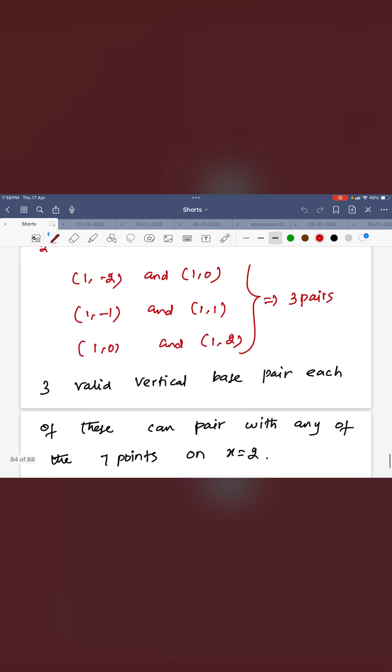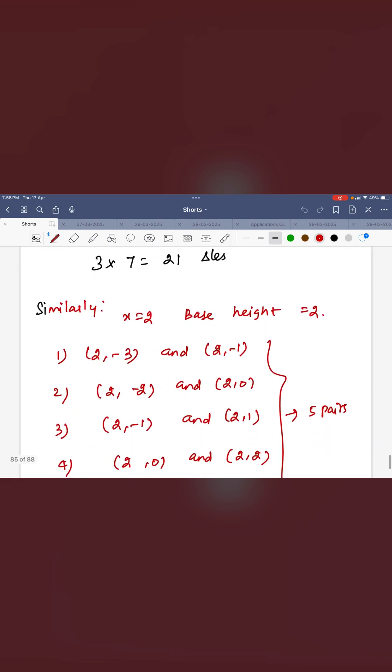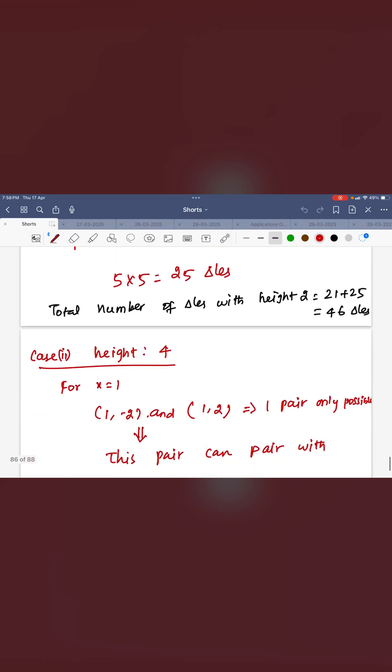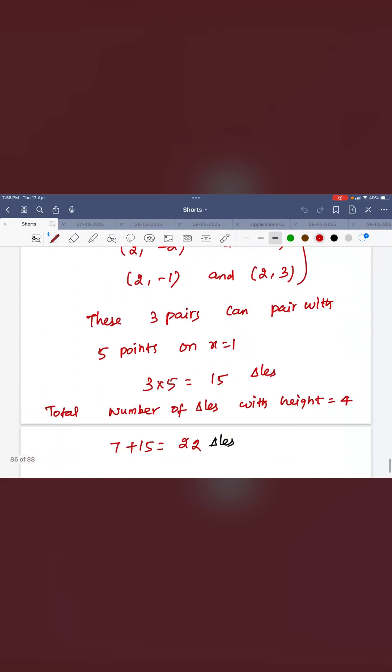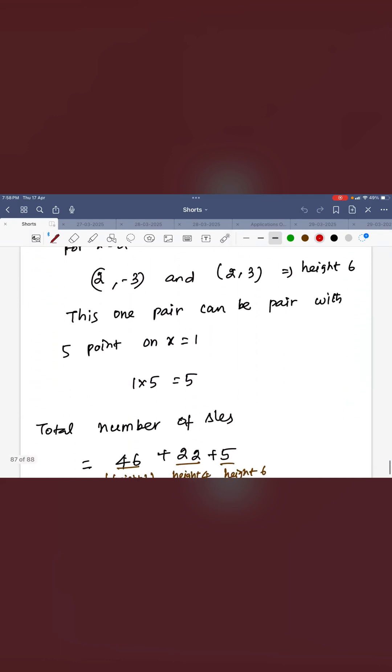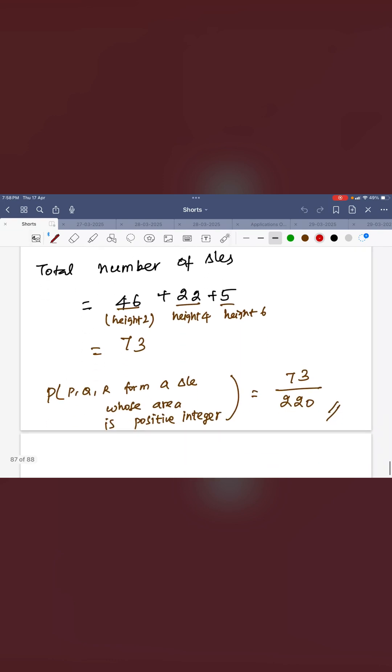If you take 2 and 4, you can see the 2, 4 and 6, you can take all the pairs. The total is 73 possible triangles. That is your favorable outcomes. We need probability whose area is positive integer, 73 by 220 is your answer.